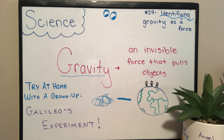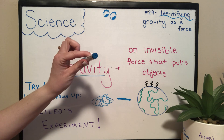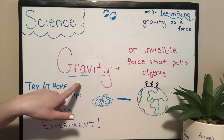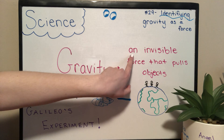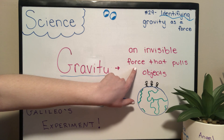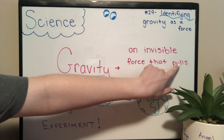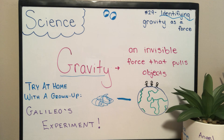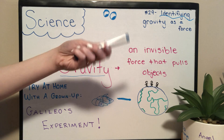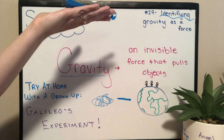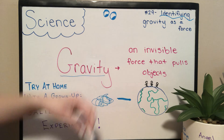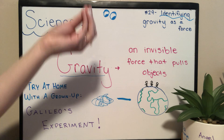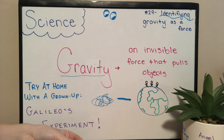And not just any force — it is an invisible force. You can't see it. It pulls objects. We call it a pull because I'm not doing anything to this marker. I'm not trying to push it up. All I'm doing is letting it go, and gravity is the invisible force that's pulling it down to the ground.